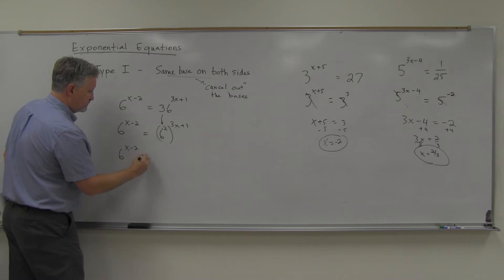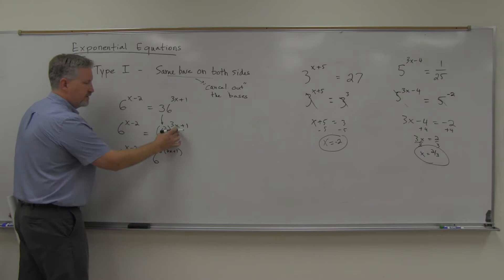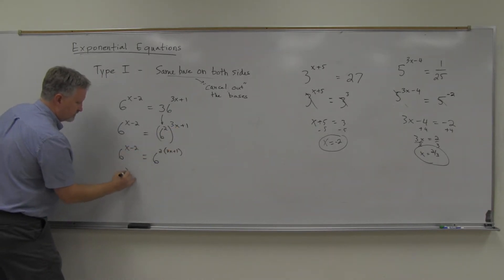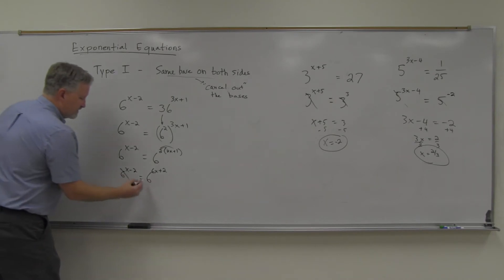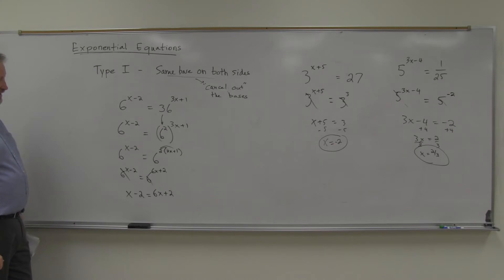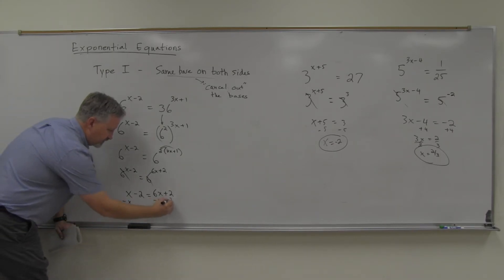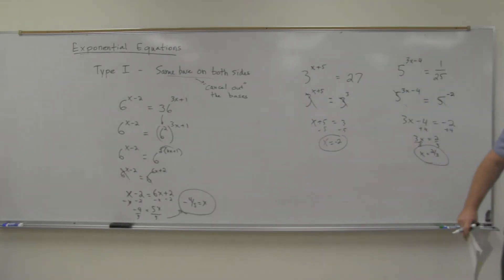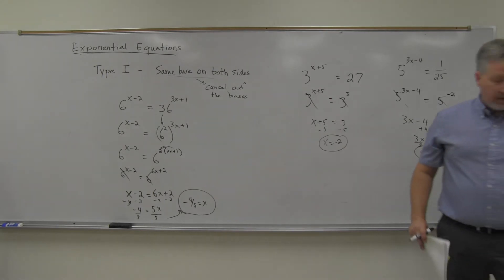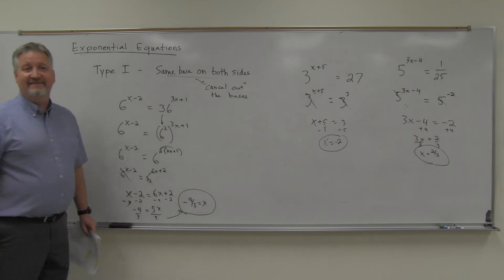So 6 squared to the 3x plus 1. What do I have to do here with these exponents? Power to a power. You multiply. So this will be 6 to the x minus 2 equals 6 to the 2 times 3x plus 1. I've got to multiply these two powers together. And whichever step you want to do that, it would be 6 to the 6x plus 2 power. Now I'm in business, all right? Distribute the 2 there, make it 6x plus 2. Now I'm in business because now, same base, cancel out. So x minus 2 equals 6x plus 2. And it's just solved accordingly. I'm going to subtract the x and then subtract 2 to get negative 4 equals 5x. You can do it the other way if you want. Divide by 5, then you've got negative 4 fifths equals x.